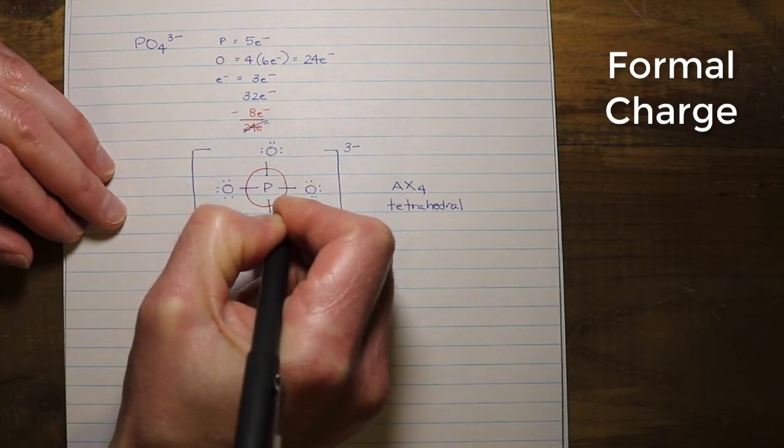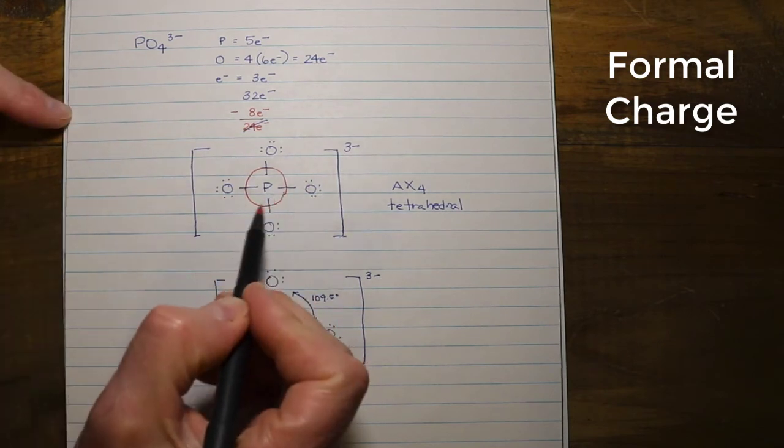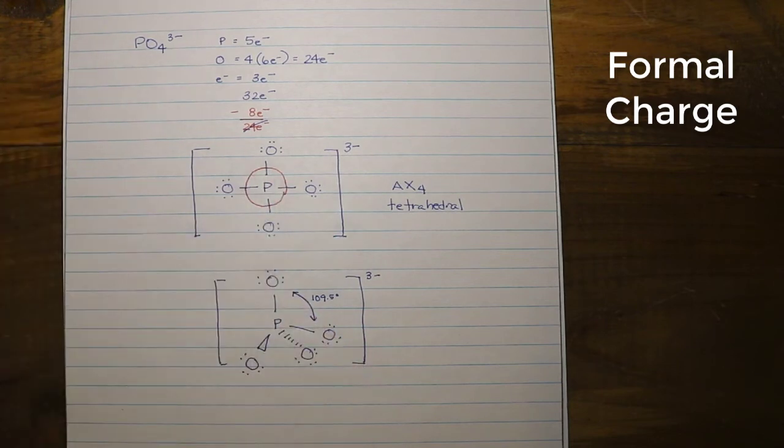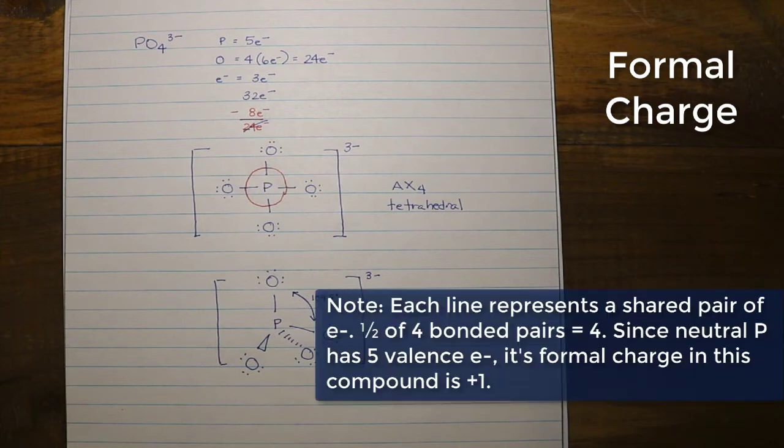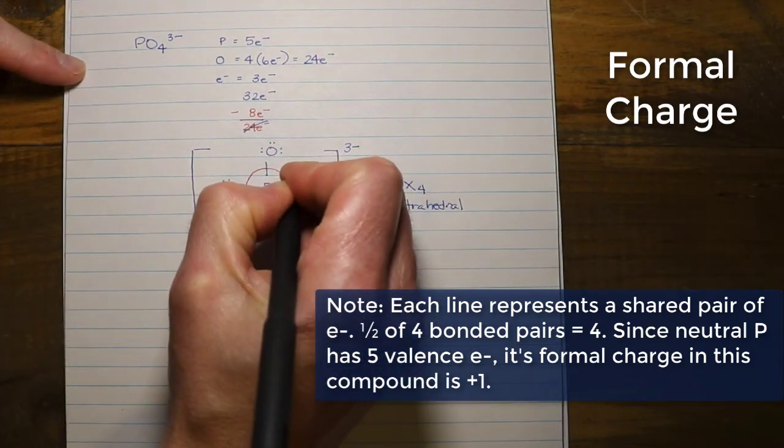And you are going to notice that this circle surrounds the phosphorus, but it also bisects each of the bonds that involves oxygen. So, what that means is, now, everything that's inside this circle is associated with the phosphorus. That means the phosphorus has 4 electrons associated with it in this compound. But, the phosphorus brought 5 electrons, meaning it's down an electron. So, we would say that its formal charge is plus 1.